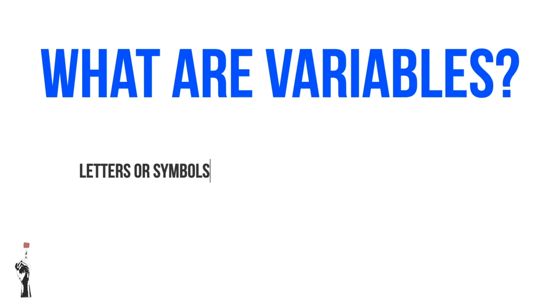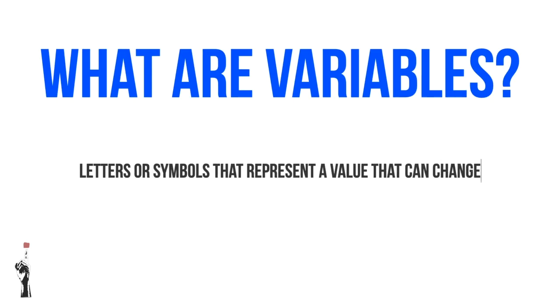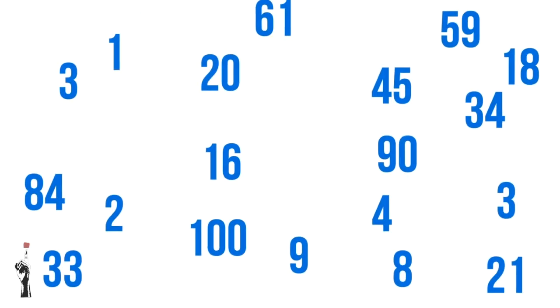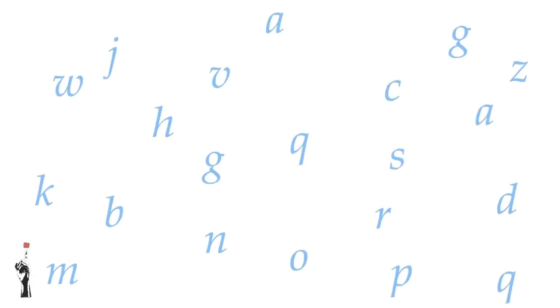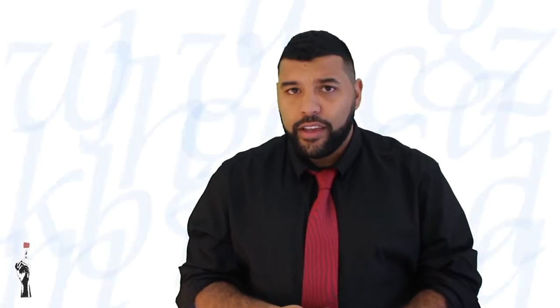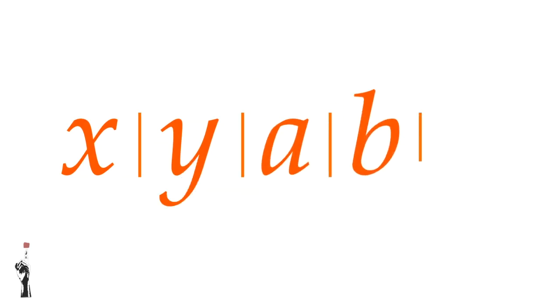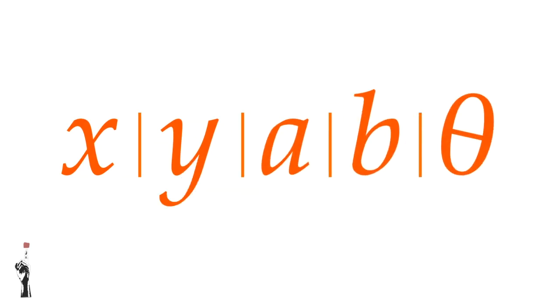So what are variables? Variables are letters or symbols that represent a value that can change. Just like we had in the earlier examples, where we replaced something with X and another thing with Y, the variables represent those values for that specific example. They can be any number such as 5, 7, 11, or any value. We can use any letter as a variable, but if you have more than one variable, each variable will need a different symbol — X, Y, A, B, or even theta.